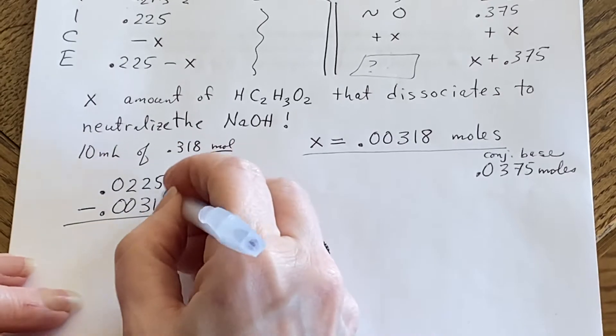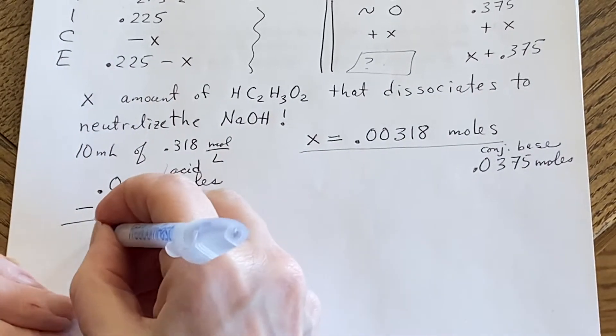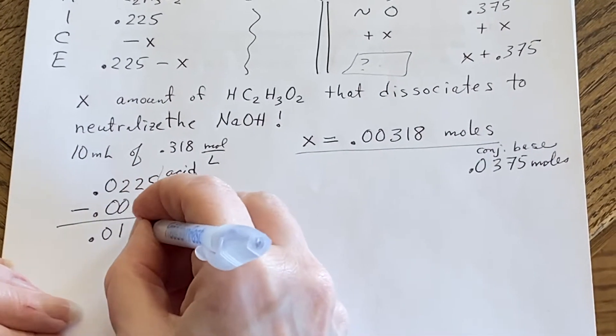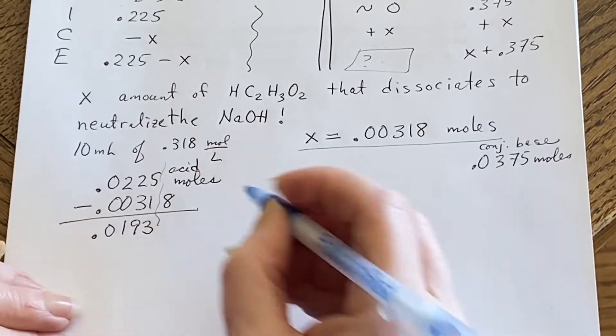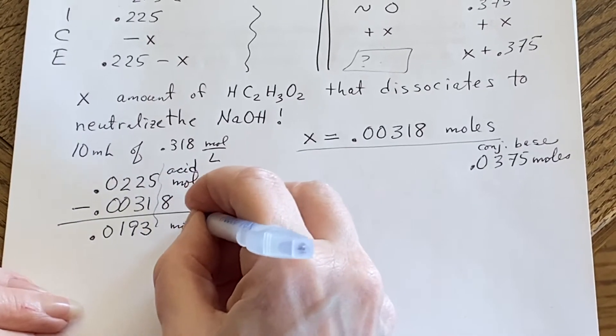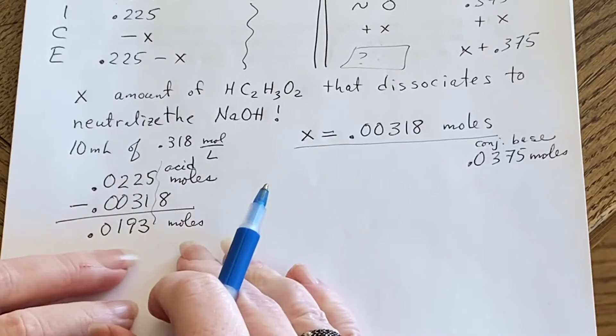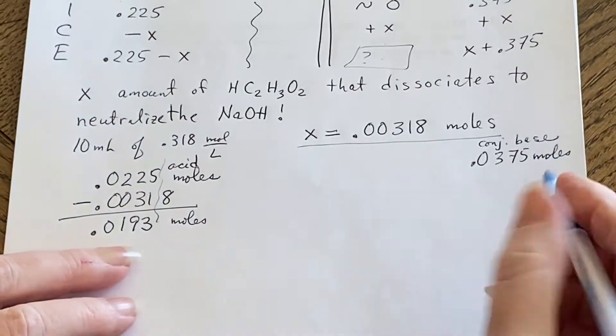It's how much dissociates. So I'll be subtracting this minus the 0.00318. And we get 0.0193 moles in whatever the volume is now. The volume is different than it was.